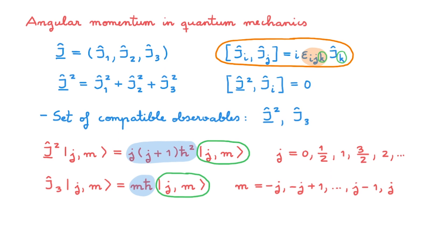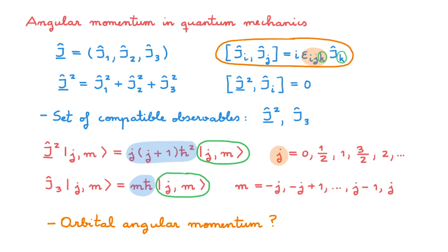In this video, we want to explore what happens when we consider the special case of orbital angular momentum. Orbital angular momentum is the angular momentum associated with the motion of particles that we are familiar with from classical mechanics. As a particular instance of an angular momentum, the properties of orbital angular momentum must be consistent with these general properties. However, what we will discover is that there are extra constraints associated with orbital angular momentum, meaning that only a subset of the allowed values of j are actually possible.